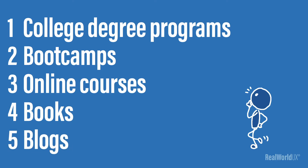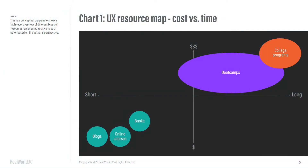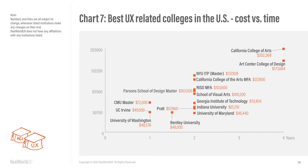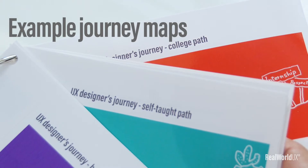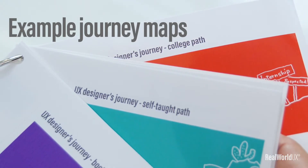And it visualizes these into charts. For example, this chart shows how these five categories are compared relative to each other in a cost versus time plane. Another chart here puts the best UX-related colleges in the US in a cost versus time plane, so that you can see an overview of their rough tuitions relative to each other.